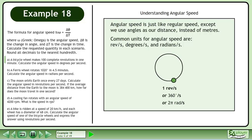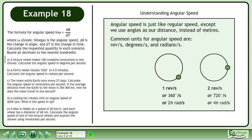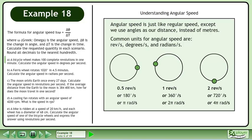The animation shows an object moving in a circle with an angular speed of one revolution per second. If we double the original angular speed, we have 2 revolutions per second. If we halve the original angular speed, we have 0.5 revolutions per second.